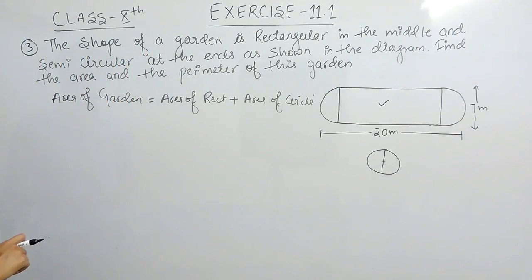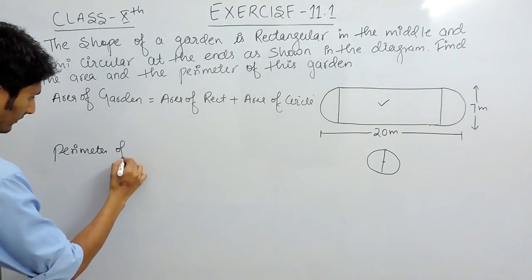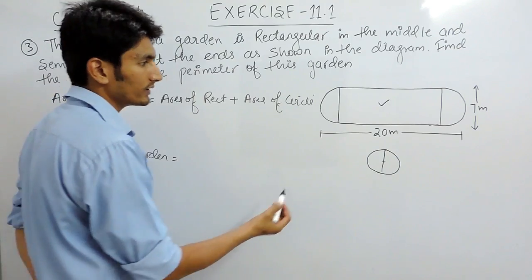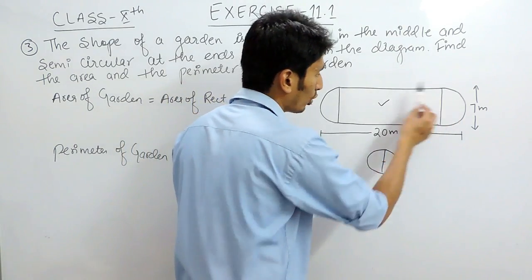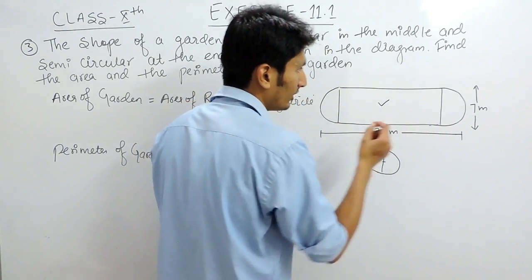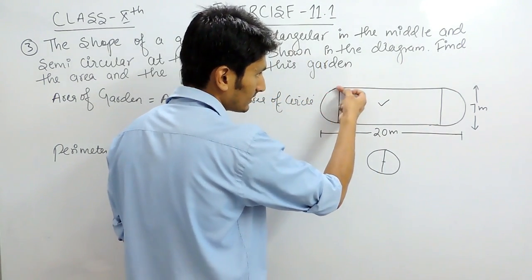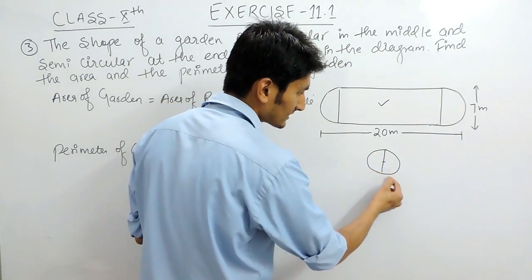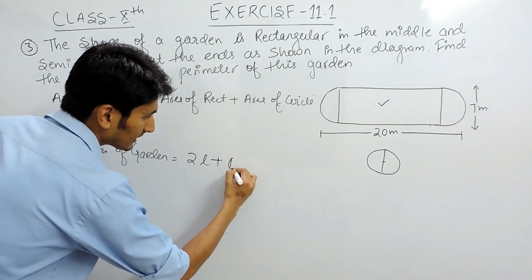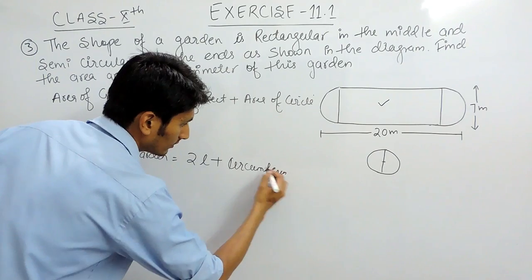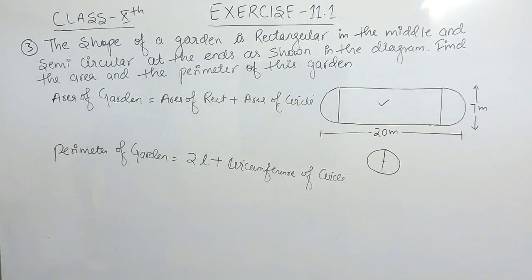Similarly, if you want to find the perimeter of the garden, you have to add these two lengths. We are not adding the breadth because the breadth is not the outer boundary for this garden. So only the length and the circumference of the circle are added. The perimeter will be 2 times the length plus the circumference of the circle.